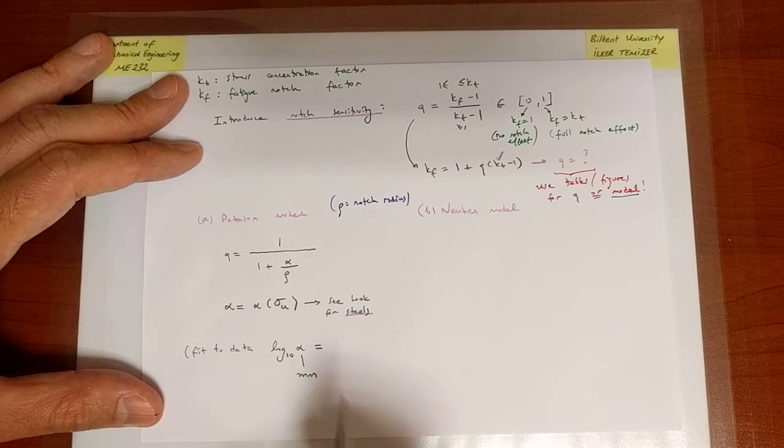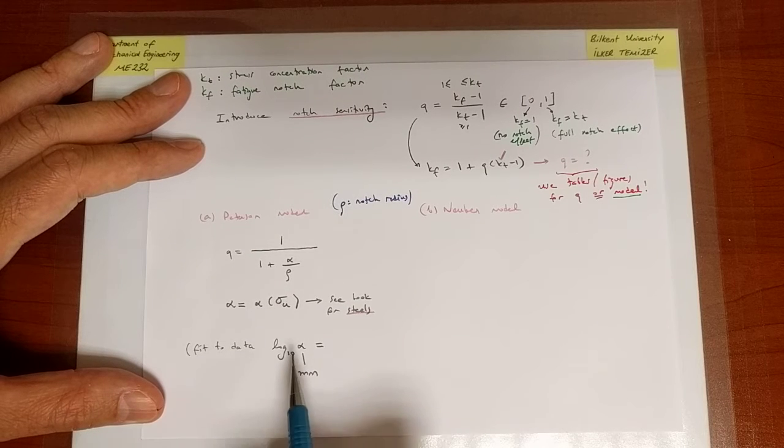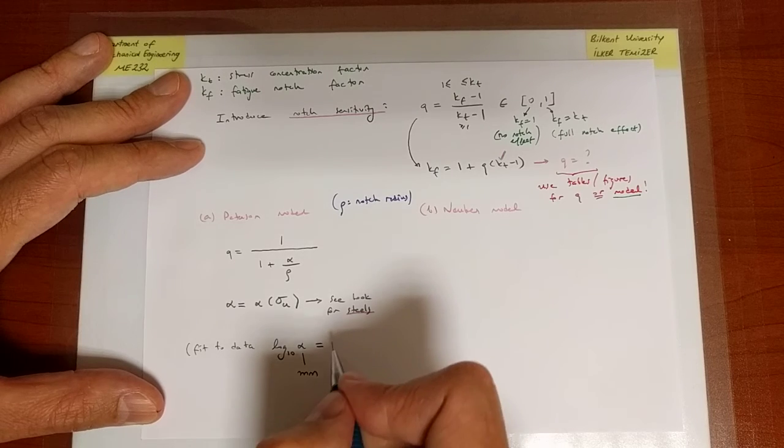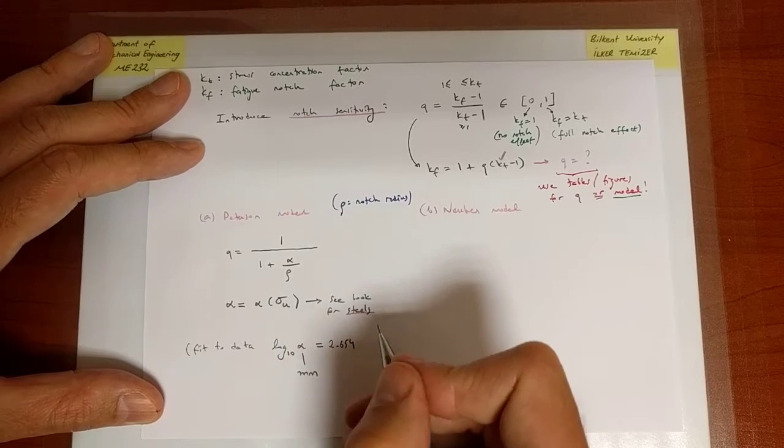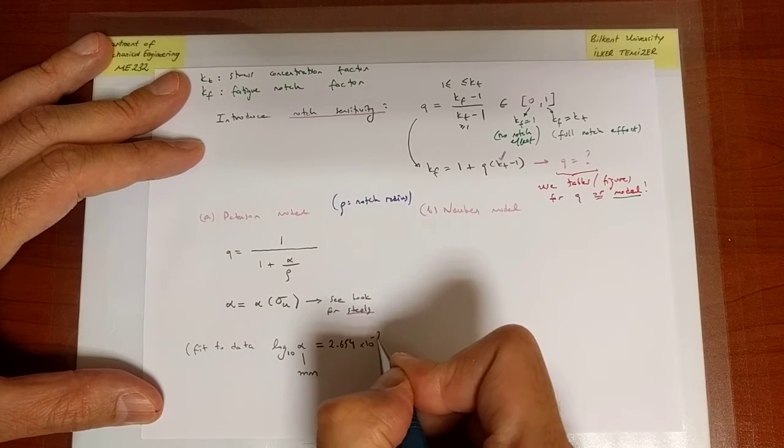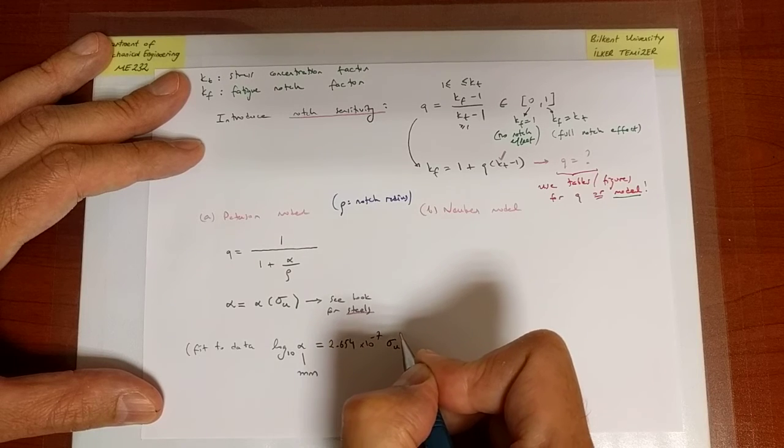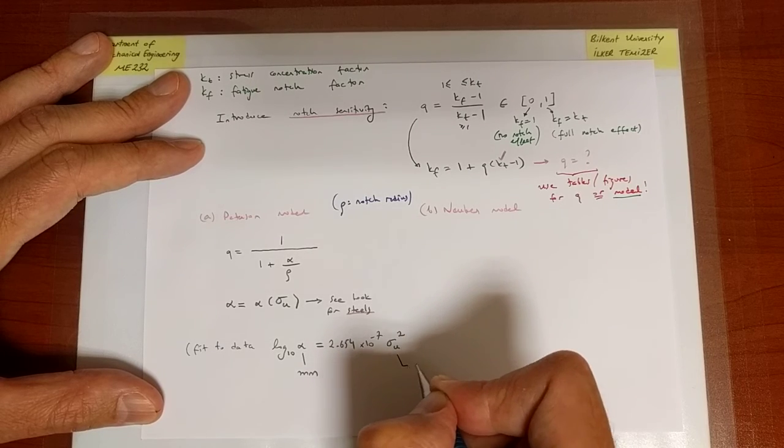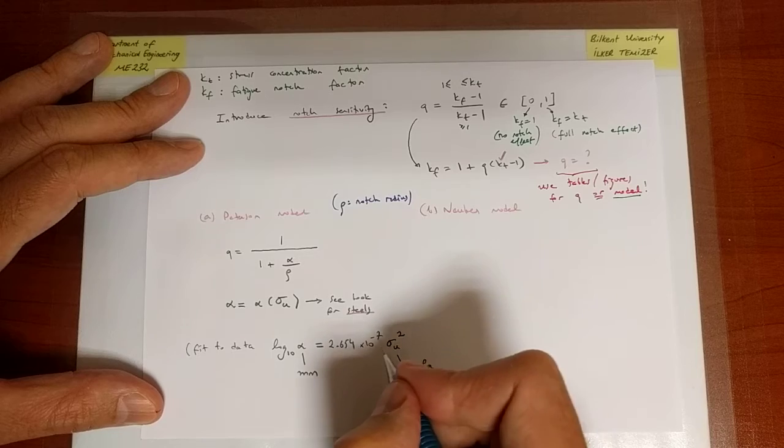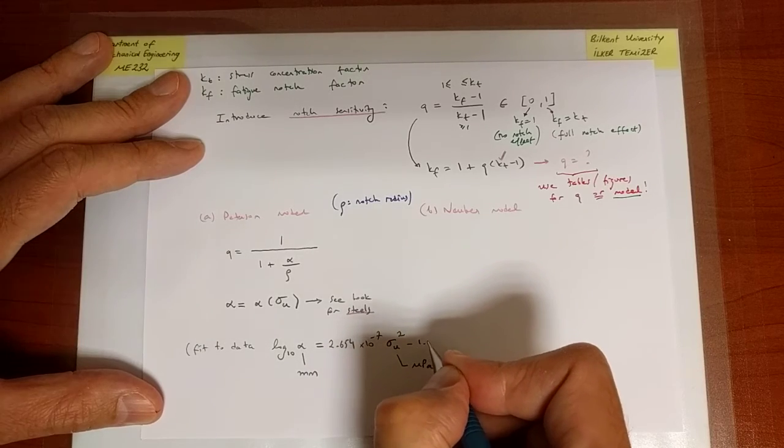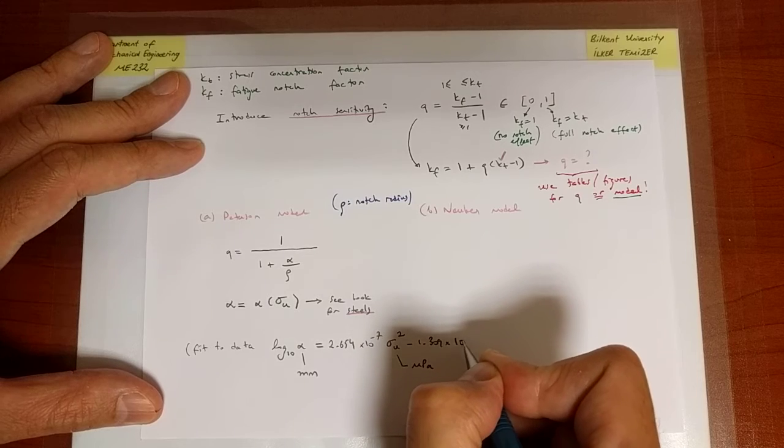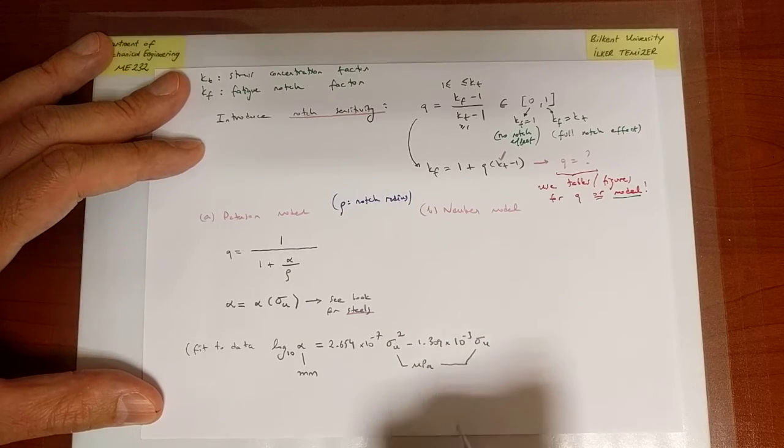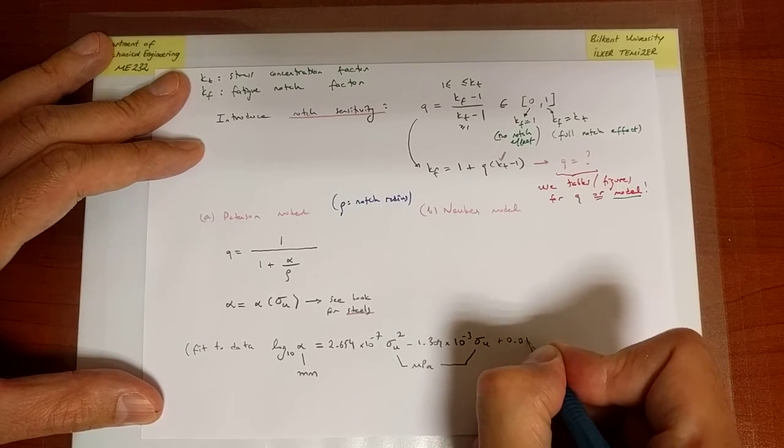The expression for alpha is given through a logarithmic relation where alpha appears in units of millimeters. That's important to keep in mind. We're calculating alpha for a given sigma u, and the value we calculate is going to have dimensions of millimeters. The expression is 2.654 times 10 to the minus 7, multiplying the ultimate strength of steel squared, and here the ultimate strength is in megapascals, and then the relation continues, minus 1.309 times 10 to the minus 3 sigma u.